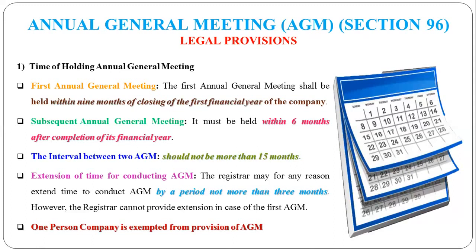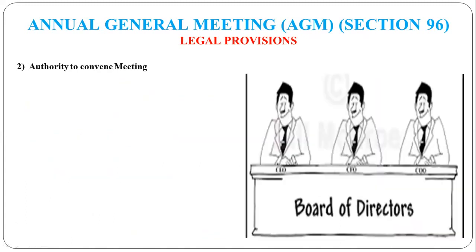One Person Company (OPC) is exempted from these AGM provisions. To summarize: the first Annual General Meeting should be held within 9 months after the first financial year ends; subsequent Annual General Meetings should be held within 6 months after the financial year ends; the gap between two Annual General Meetings should not exceed 15 months; and if a company needs an extension to conduct the AGM, the Registrar can grant up to 3 months extension. Remember these conditions as objective questions can come from them.